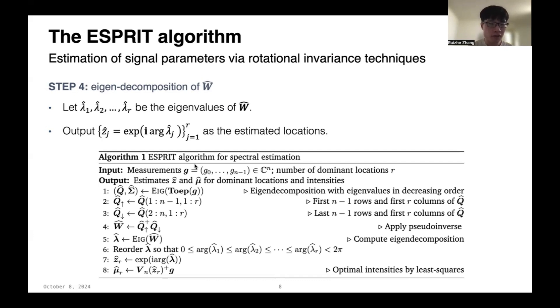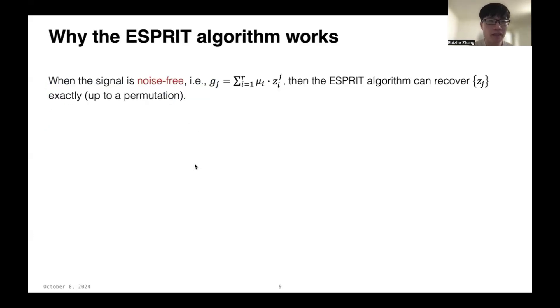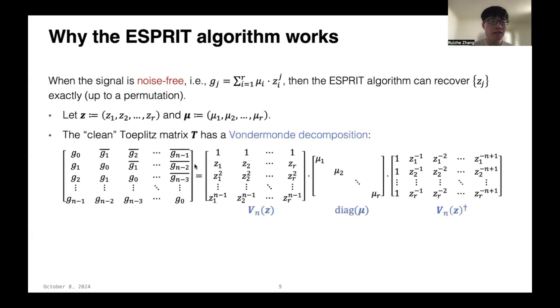But, you may wonder why these various things work. We claim that when the signal is noise-free, then the ESPRIT algorithm can recover the locations exactly up to a permutation. Why? The key observation is that for the clean version of the Toeplitz matrix T, it has the following Vandermonde decomposition, which is the Vandermonde matrix formed by the location vector z times a diagonal matrix formed by the intensity vector μ times the Vandermonde matrix transpose. By comparing the two decompositions of T, the Vandermonde decomposition and the eigen decomposition, we can find that the range of the Vandermonde matrix equals to the range of the first r eigenvectors.